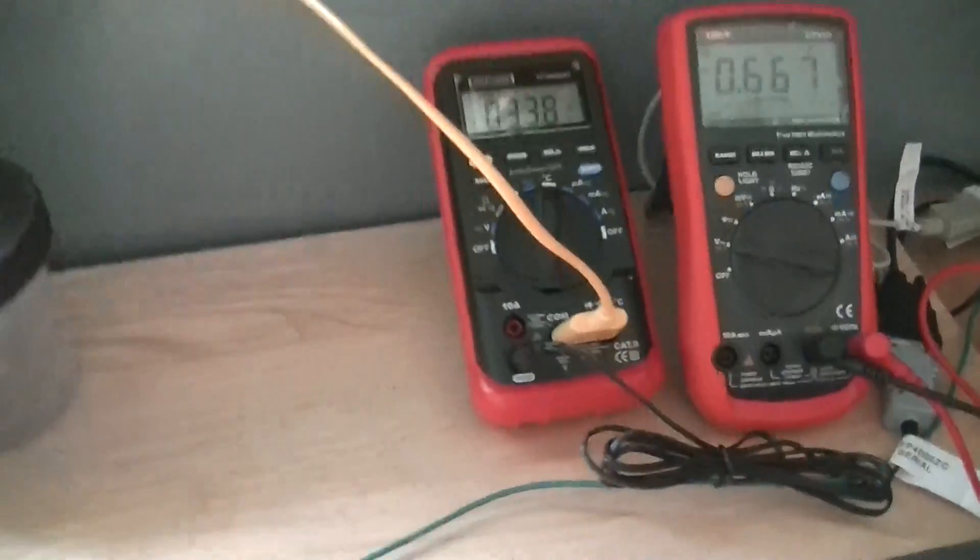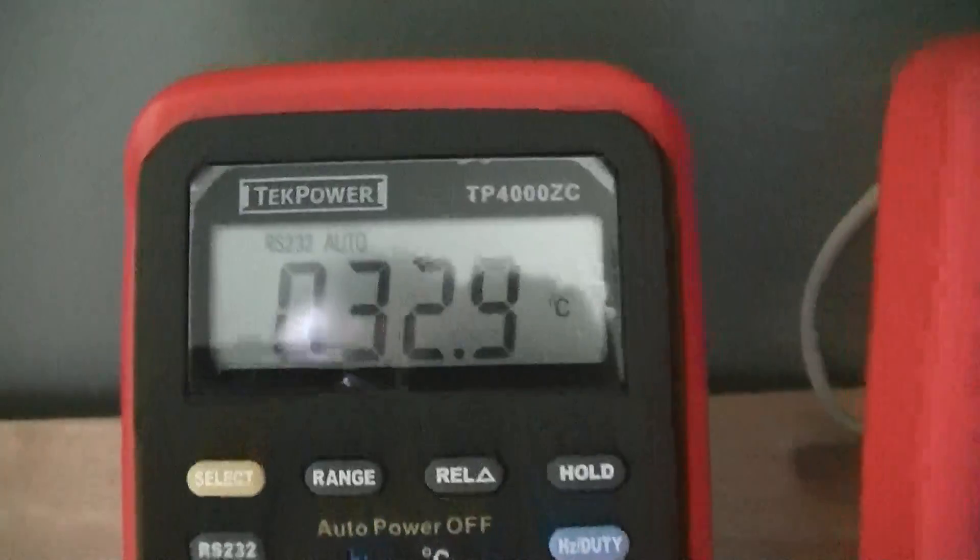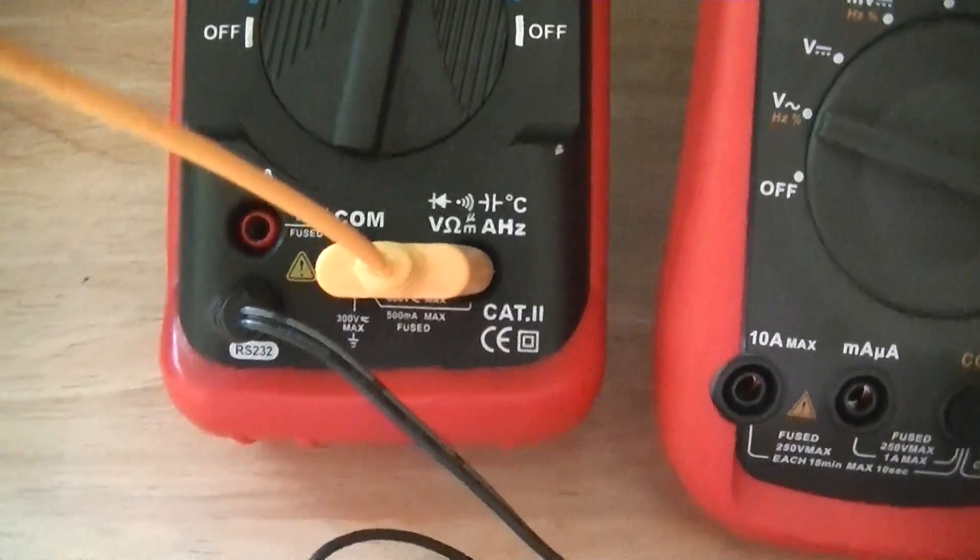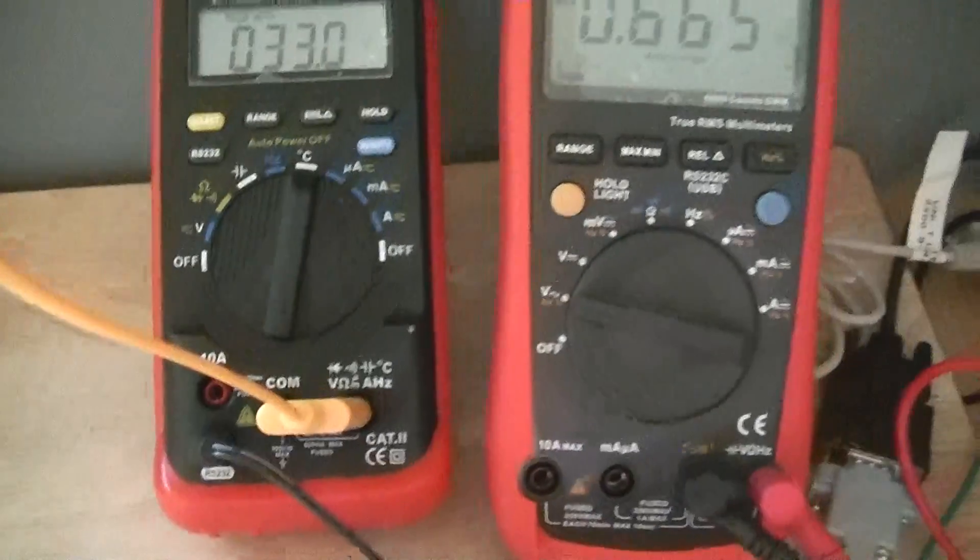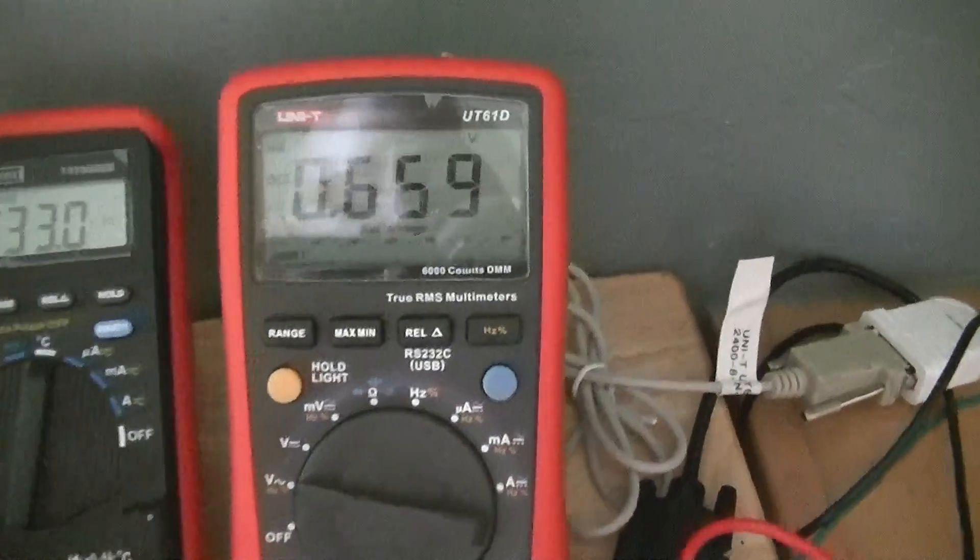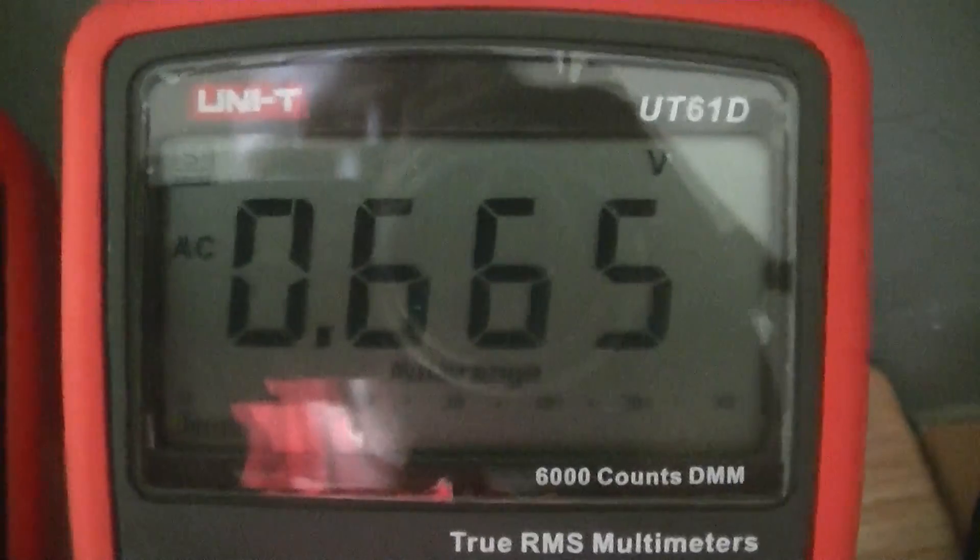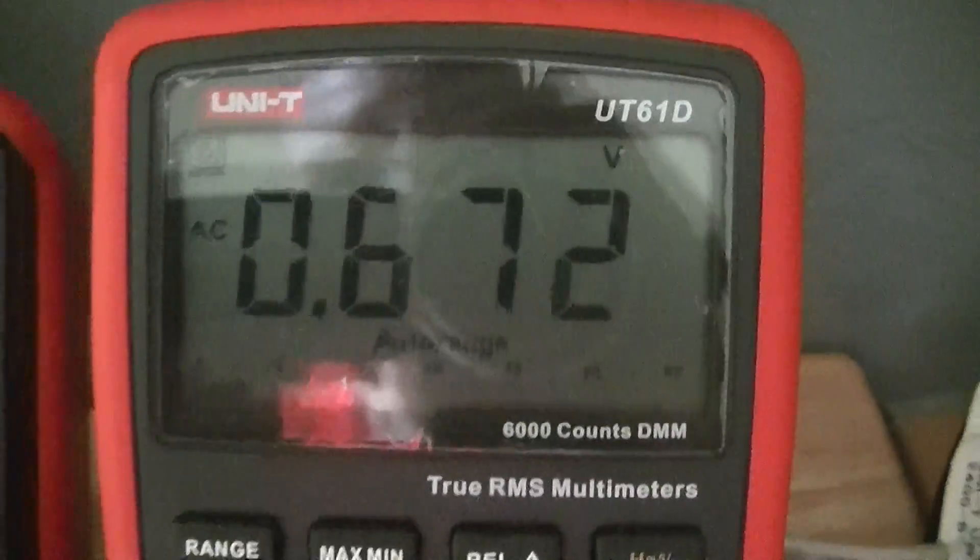This one is actually measuring air temperature. The reason why we have the TechPower TP-4000ZC measuring temperature is because in my area, in Tucson, Arizona, the stray voltage follows temperature in air conditioning season.